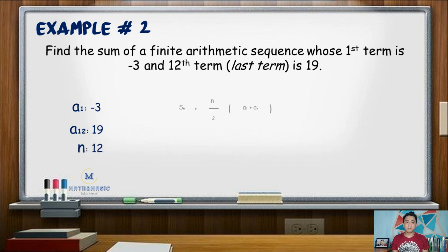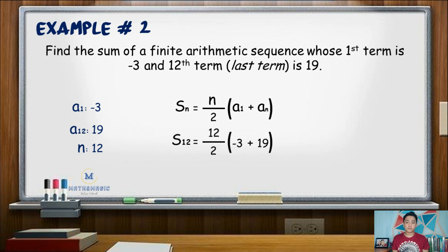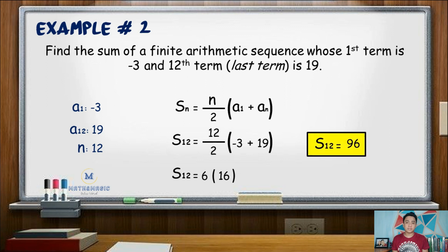The sum of the first 12 terms is equal to 12 over 2 times the quantity negative 3 plus 19. 12 divided by 2 is positive 6, and negative 3 plus 19 is positive 16. Multiplying those two numbers gives a product of 96. Hence, the sum of this finite arithmetic sequence is 96.